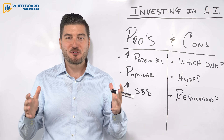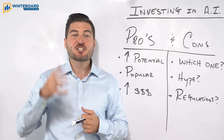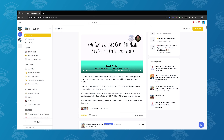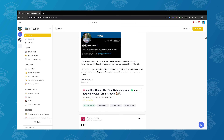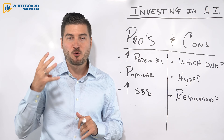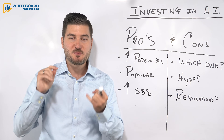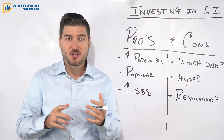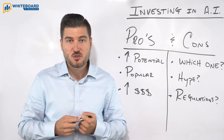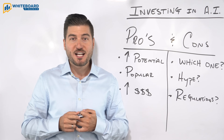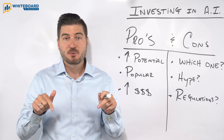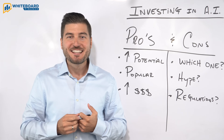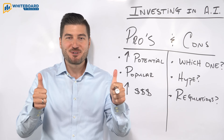I just want to shout out Whiteboard Finance University, where we're teaching the four pillars of wealth in our private community — money management, increasing your income, and investing in stocks and real estate, all proven wealth builders over the past 100 years. Check out Whiteboard Finance University in the link below and use code AI20 to get 20% off. Thank you so much for watching and have a prosperous day.